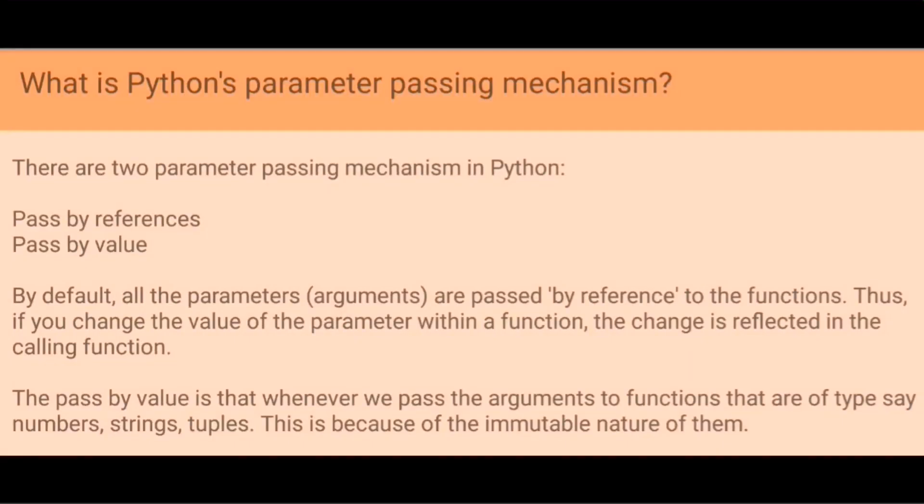What is Python's parameter passing mechanism? There are 2 parameter passing mechanisms in Python: Pass by reference and pass by value. By default all the parameters (arguments) are passed by reference to the functions. Thus if you change the value of the parameter within a function, the change is reflected in the calling function.